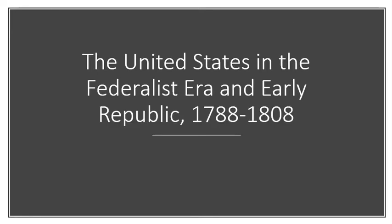Today we'll be looking at the earliest period of American government, what we call the Federalist Era, from 1788 to 1800, and at the beginnings of the next epoch in our political history known as the Early Republic, which stretches from 1800 to 1824.